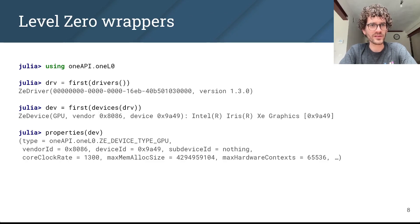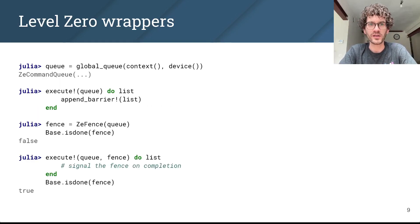At the lowest levels, we have the level zero wrappers. These are part of their own library, their own module, oneL0, which you can import after you have imported the oneAPI package. You can use these wrappers to iterate devices, inspect properties, and so on.